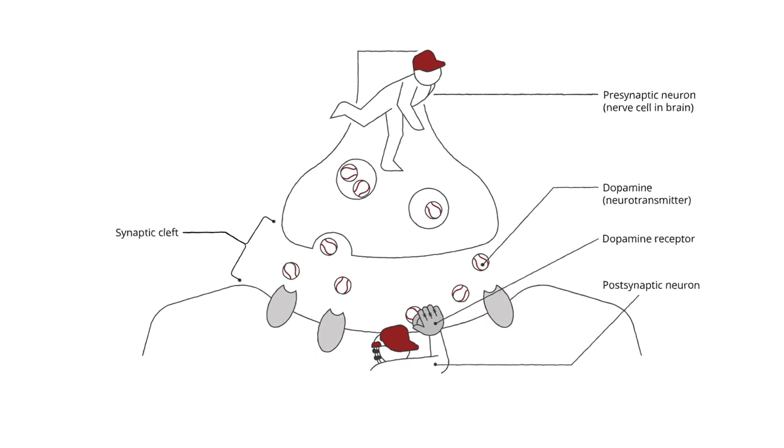In other words, neurons are separated by a small space that's bridged by neurotransmitters, which serve as a built-in control mechanism to regulate the electrical signals propagating throughout the brain.